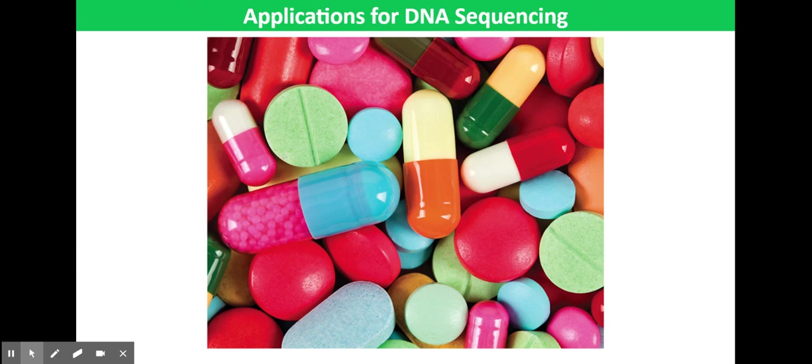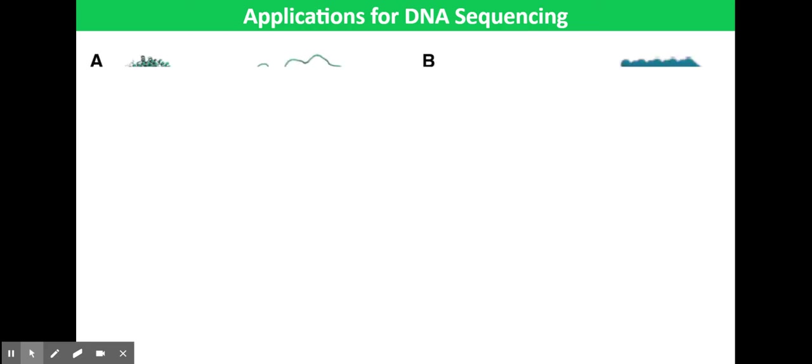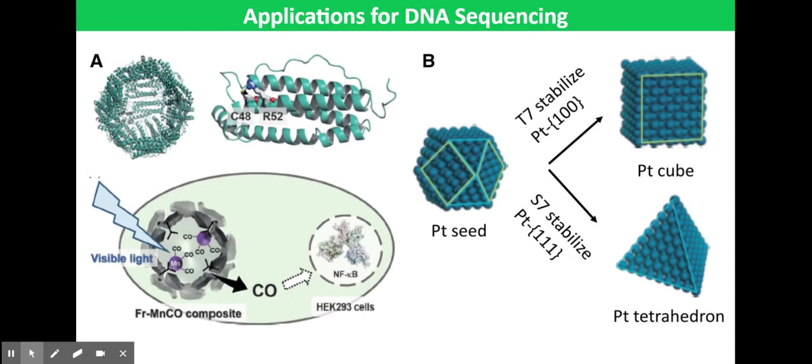Another example of synthetic biology applications is novel proteins. Designed proteins have been produced, for example, one that is similar to hemoglobin and binds to oxygen, but not to carbon monoxide.